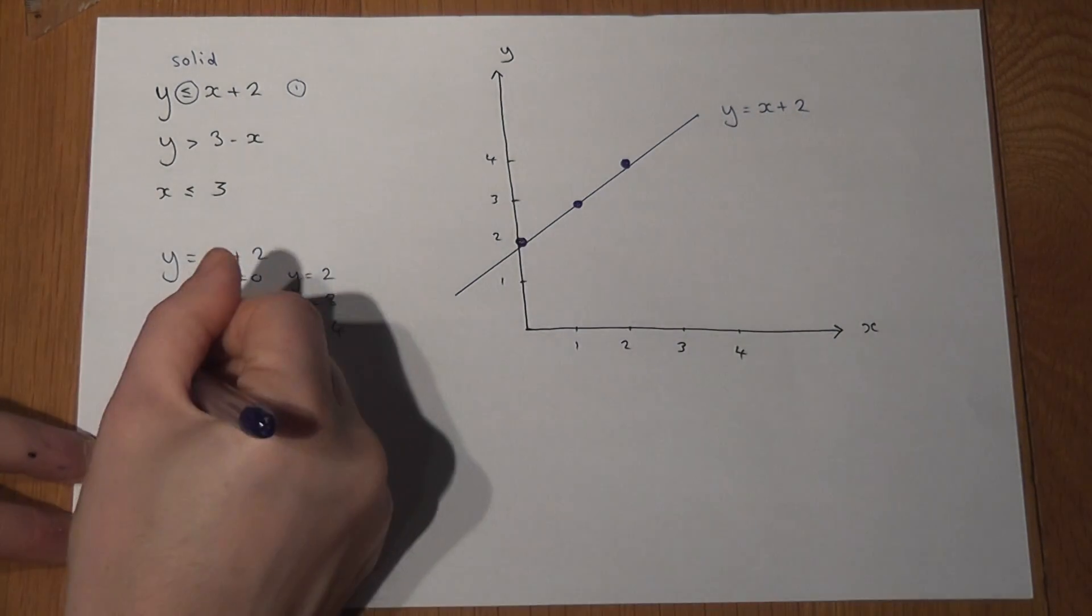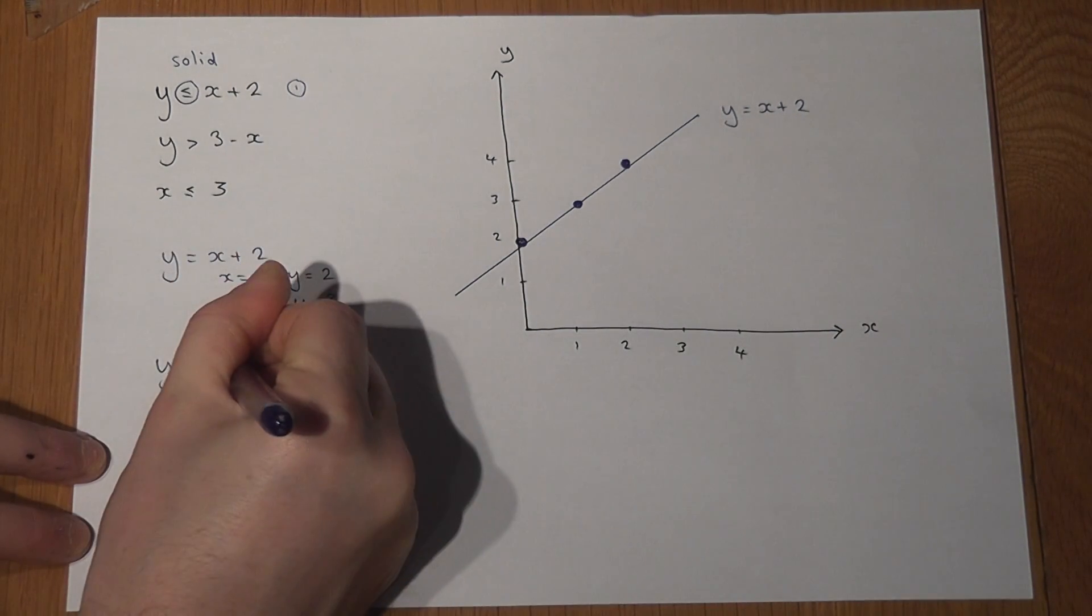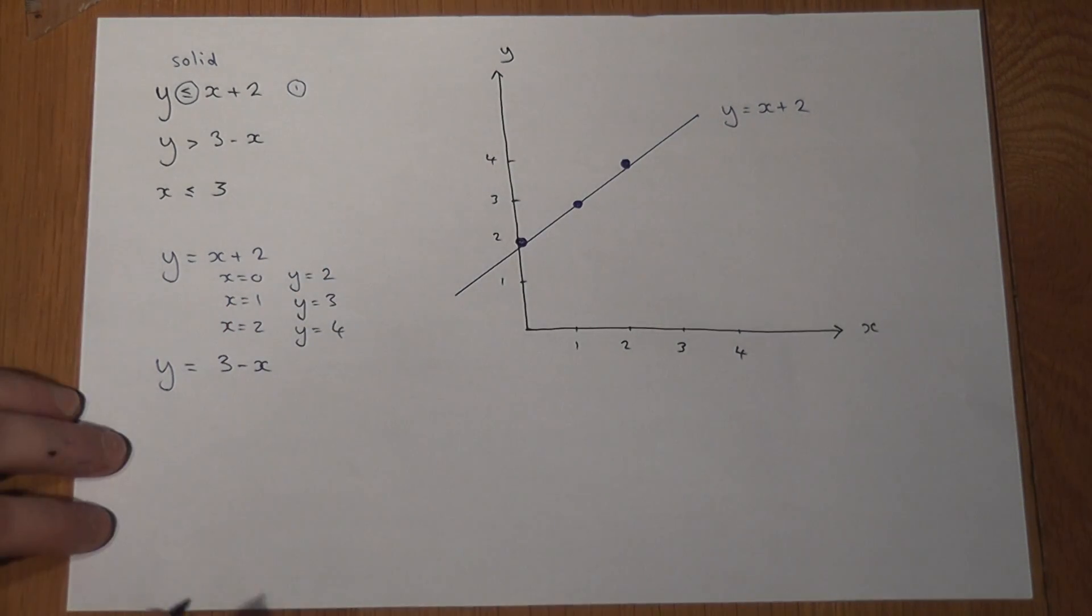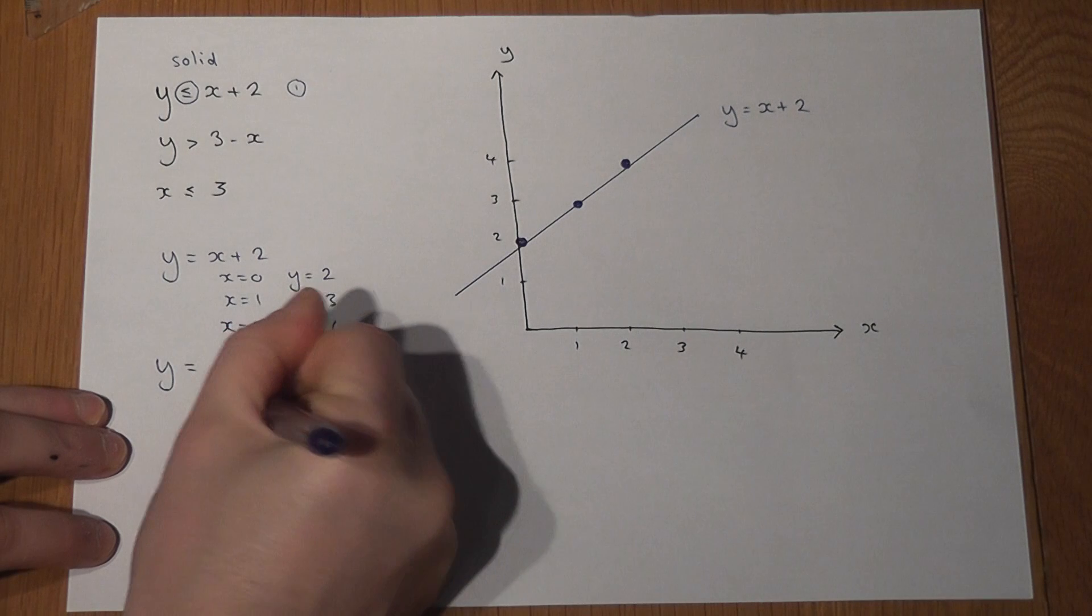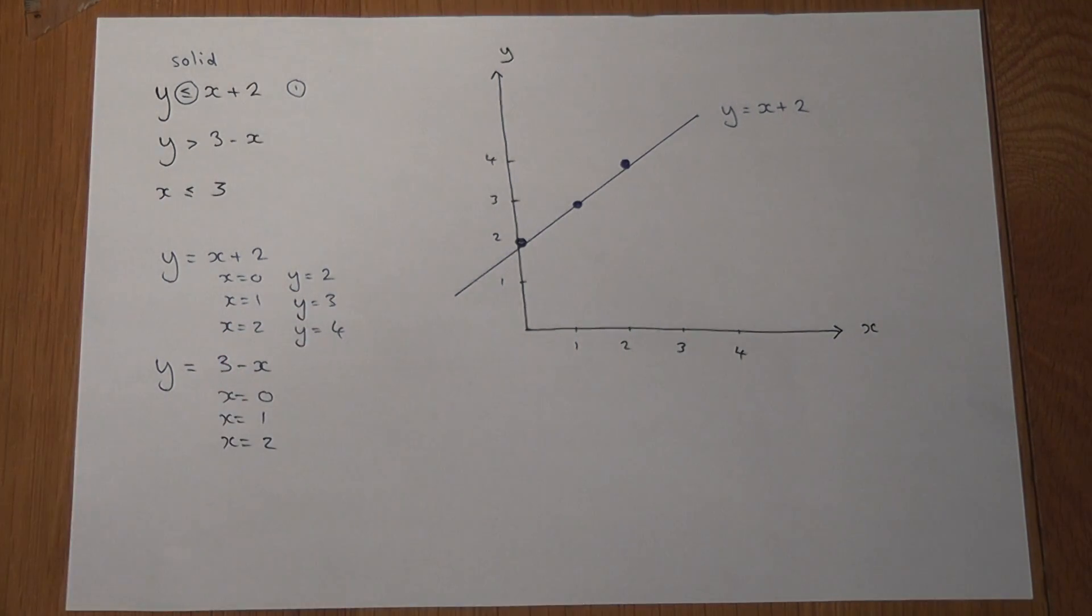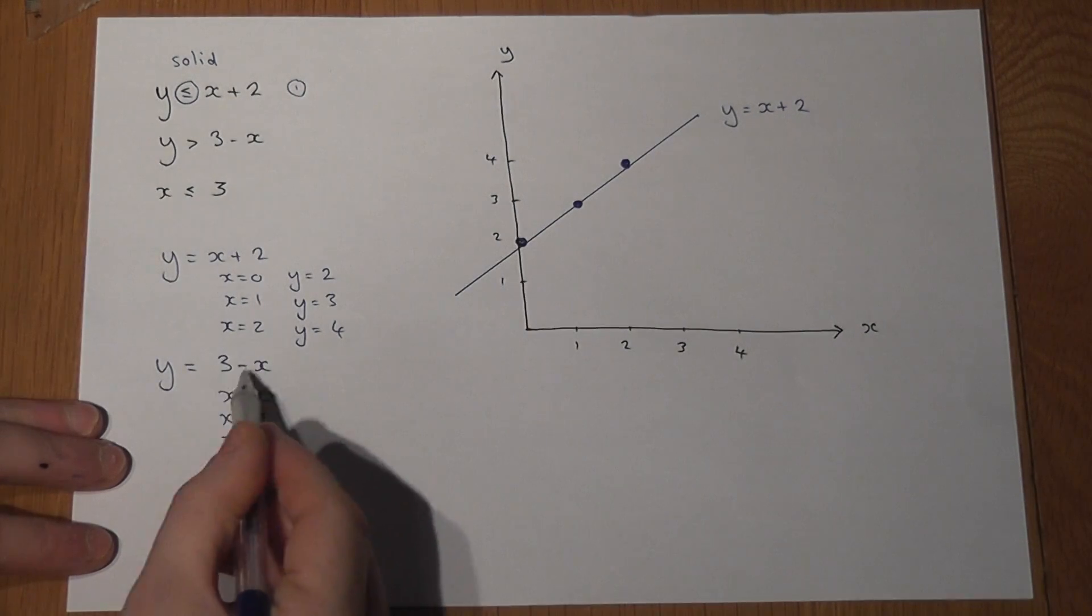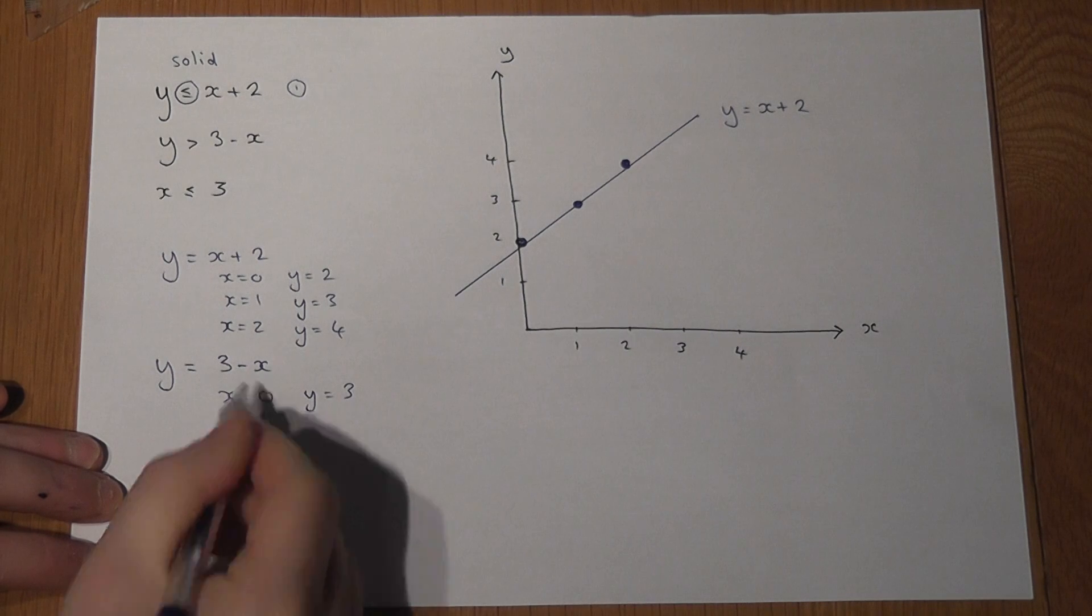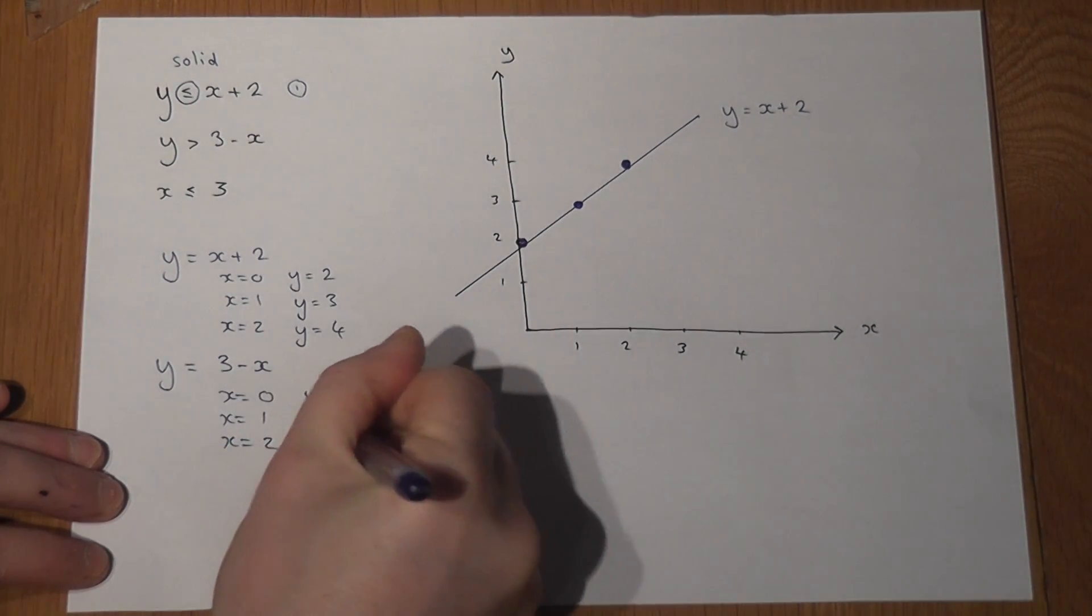The second one, imagine y equals 3 minus x. I'm going to draw the line for the moment. Now again, if x is 0 or x is 1 or x is 2, I can find the y coordinates. If x is 0, 3 take 0 equals 3. If x is 1, 3 take 1 equals 2. If x is 2, 3 take 2 equals 1.